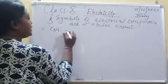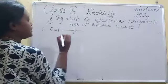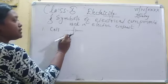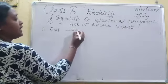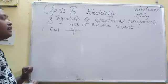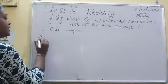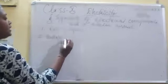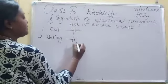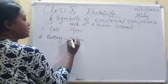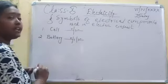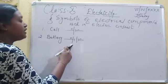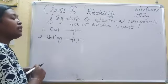Cell is represented in this way. The longer vertical line represents the positive terminal and the shorter line represents the negative terminal. Second is battery. Battery is represented as — this is the positive terminal, this is the negative. What is battery? Battery is a combination of two or more cells.